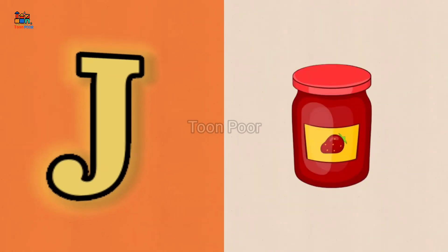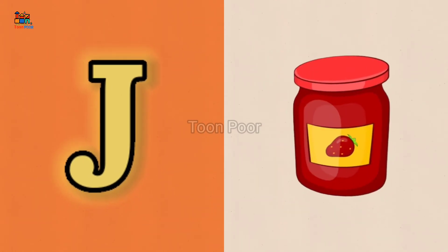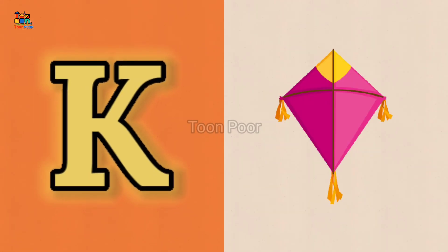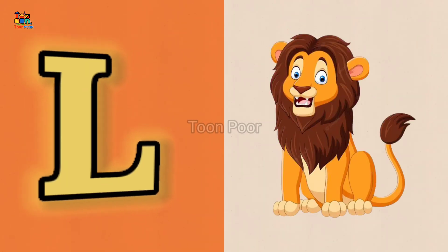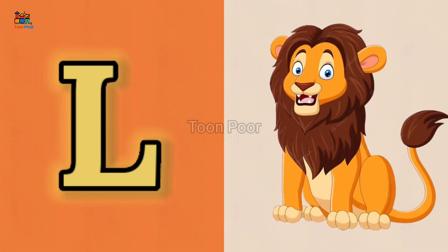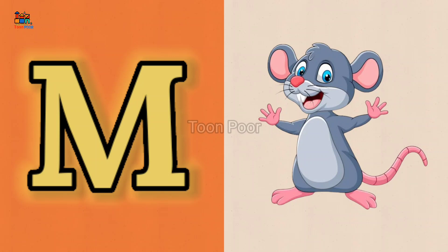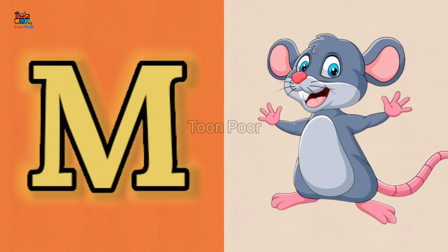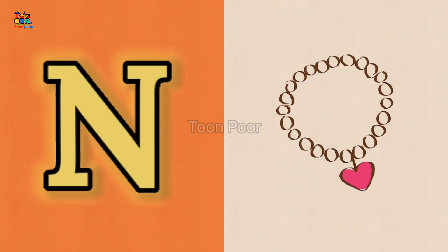J for jam, K for kite, L for lion, M for mouse, N for necklace.